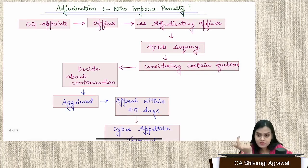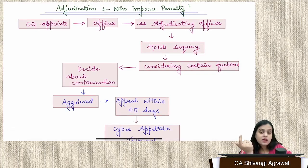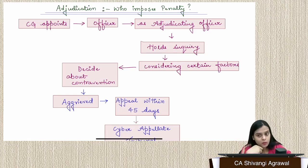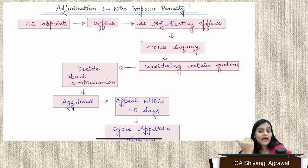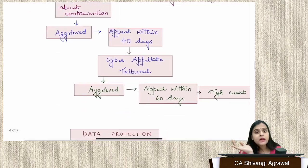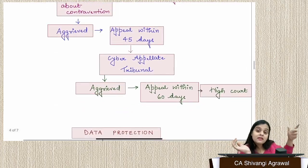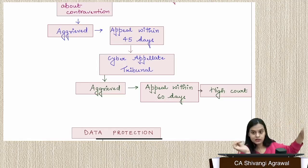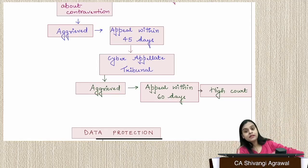Regarding adjudication: the central government appoints an adjudicating officer. If anyone contravenes any provisions, this officer holds an inquiry and decides whether a contravention has occurred. If dissatisfied with the order, you can appeal within 45 days to the Cyber Appellate Tribunal. If still aggrieved, you can make a further appeal to the High Court within 60 days.